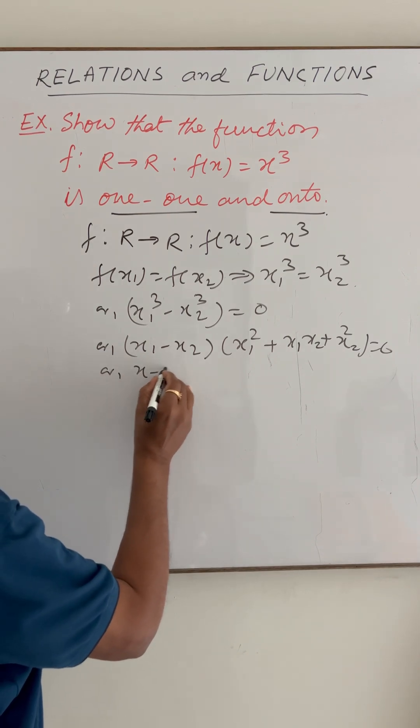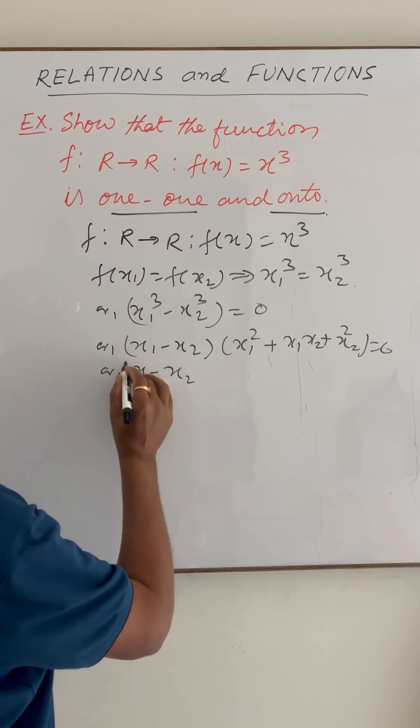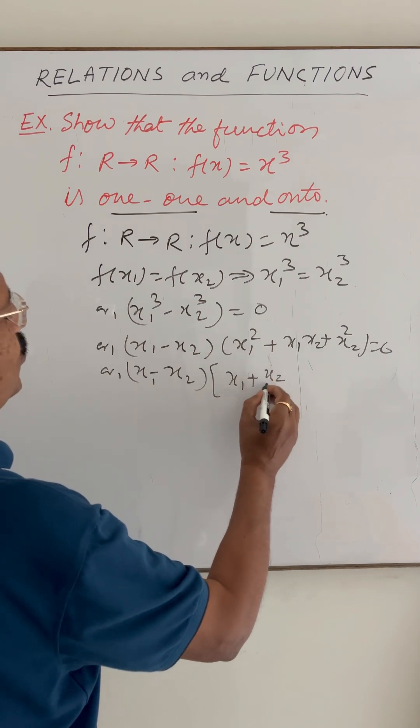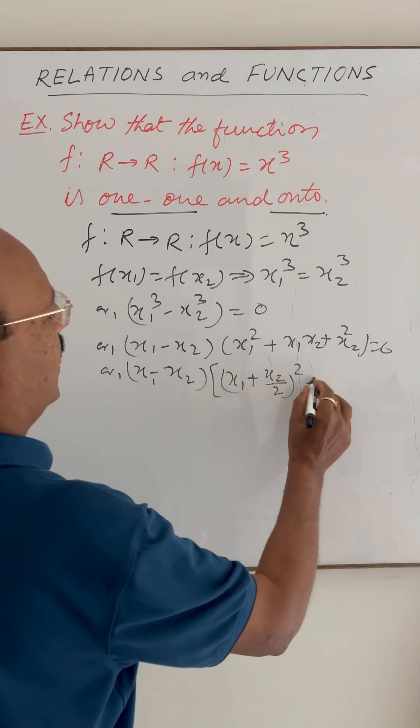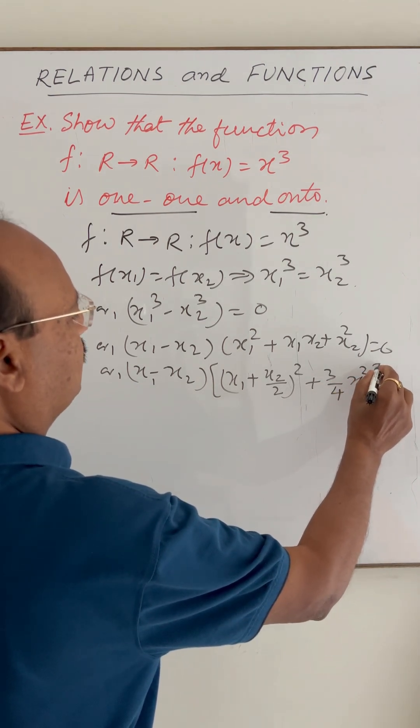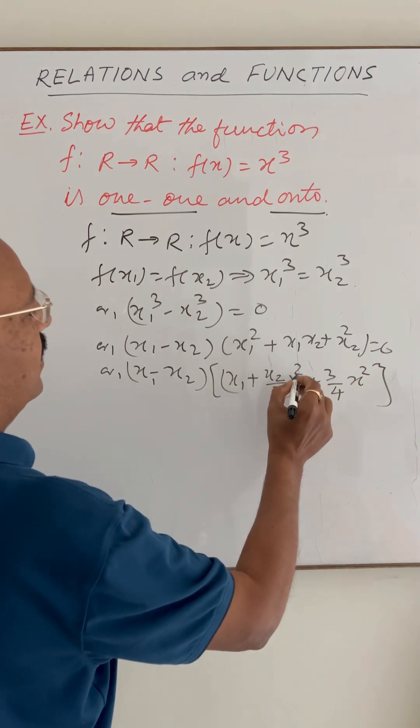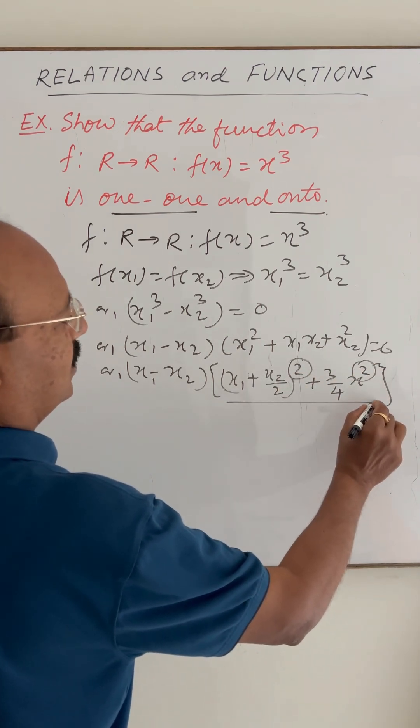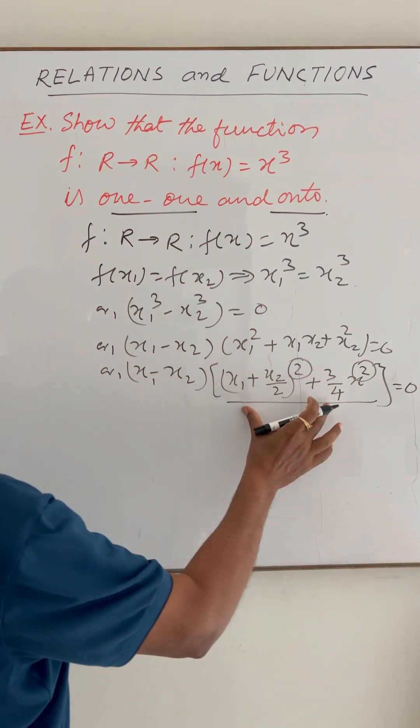This can be written as x₁ minus x₂ into (x₁ plus x₂ by 2) whole square plus 3 by 4 x square. Here this is square, this also is square, so this is not equal to zero.